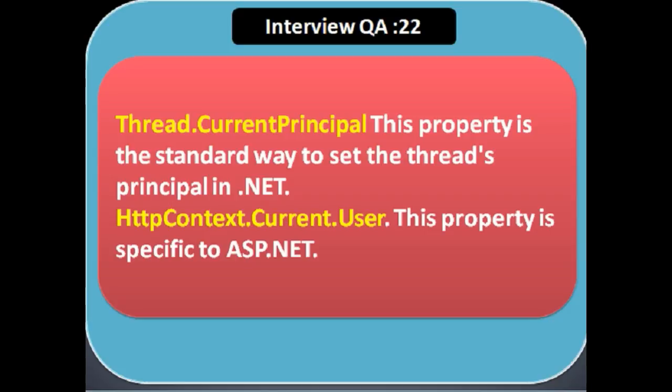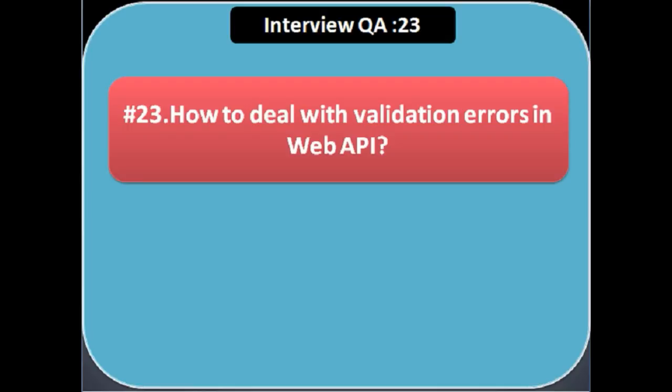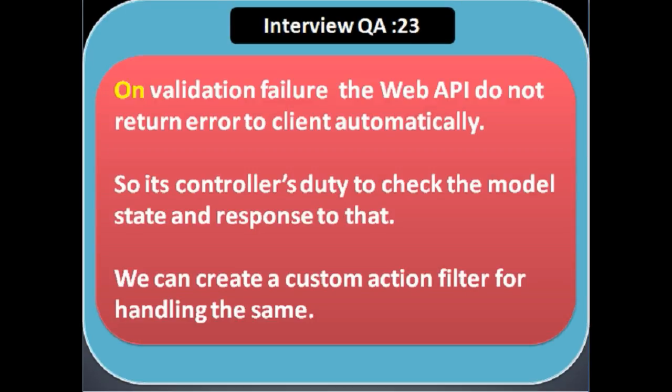In Thread.CurrentPrincipal we set the object of the IPrincipal interface, and in the same way in HttpContext.Current.User we set it. Next question: how to deal with validation errors in Web API. On validation failure, Web API does not return an error to the client automatically, so it's the controller's duty to check the model state and respond to that.